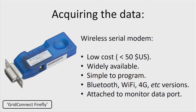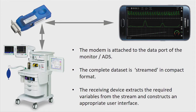How do we get the data? You use what are called wireless serial modems. The cheapest of these costs about US$50. They're widely available, simple to program, and come in all sorts of flavors — from Bluetooth through Wi-Fi through 4G. You simply attach them to the monitor's data port. In this example, I've attached a Bluetooth serial modem to the anesthesia machine, which is streaming data to a mobile phone that selects variables to plot and creates a user interface. In this particular example, it's also performing a fast Fourier transform in real time.